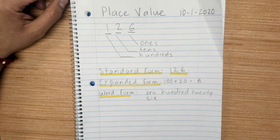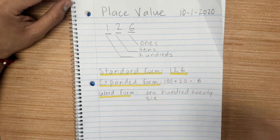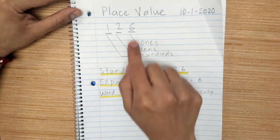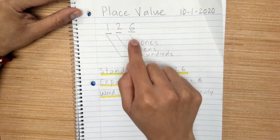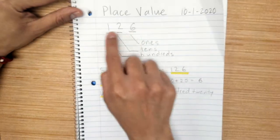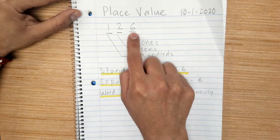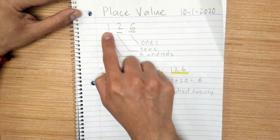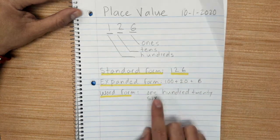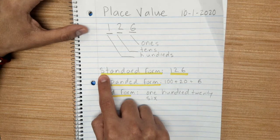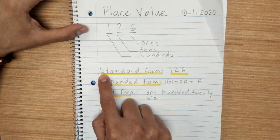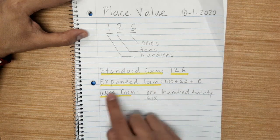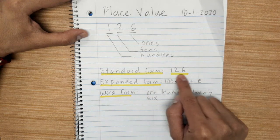All right everybody, Mr. Hernandez here. We're going to review what we did yesterday — place value. As we look at this three-digit number, six is in the ones place, two is in the tens place, one is in the hundreds place. We have our three vocabulary words for this week: standard form, expanded form, and word form.